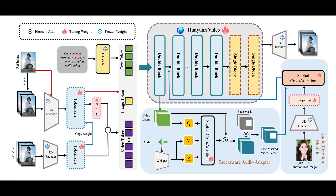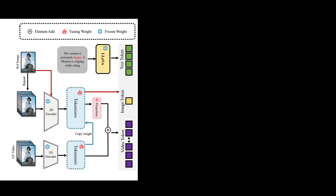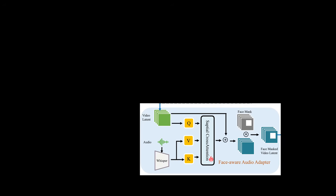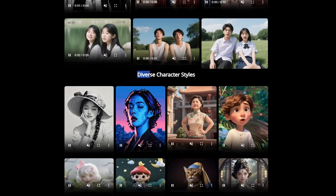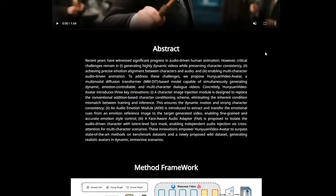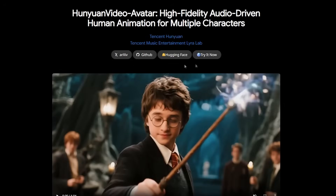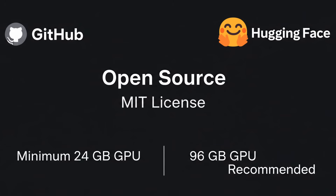So how does it make a still photo come to life so realistically? It uses a powerful model based on a multimodal diffusion transformer with three key innovations. First, a special character image injection module that preserves the person's identity perfectly while allowing for dynamic movement. Second, an audio emotion module that extracts the emotional tone from the audio and applies it to the character's face for super accurate expressions. And third, for videos with more than one person, its face-aware audio adapter can isolate each speaker, making sure only the right person is talking at the right time. It's a total system for creating believable digital human avatars. The team has an official GitHub repository, a page on Hugging Face with the model, and a Try It Now link on their project page. It's fully open source under the MIT license. The minimum GPU memory required is 24GB, but they recommend a beefy 96GB GPU for the best quality.